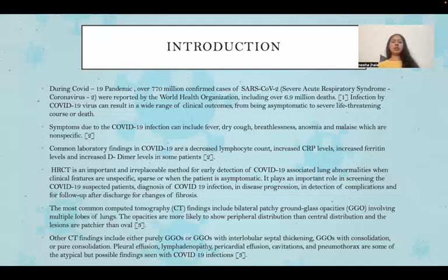Pleural effusion, lymphadenopathy, pericardial effusion, cavitations, and pneumothorax are some of the atypical but possible findings that can be seen in COVID-19 infections.